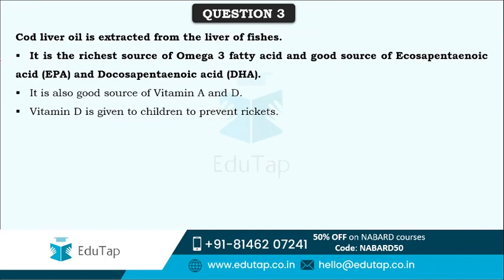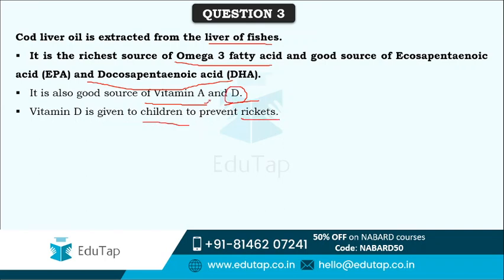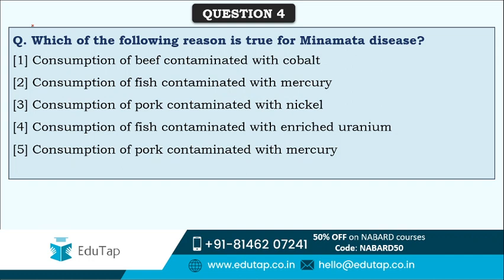Cod liver oil is extracted from the liver of fishes and it is the richest source of omega-3 fatty acid - that can also be asked in the exam. This oil is also a good source of eicosapentaenoic acid and docosapentaenoic acid, and is a good source of Vitamin A and D. Due to deficiency of Vitamin D, rickets occur in children; due to deficiency of Vitamin A, color blindness occurs. So cod liver oil is an important source of these vitamins.